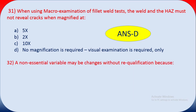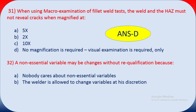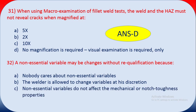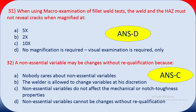Question thirty-two: a non-essential variable may be changed without requalification because — it does not affect any mechanical property. Non-essential variables do not affect mechanical or notch toughness properties. The answer is C — non-essential variables do not affect the mechanical or notch toughness properties.